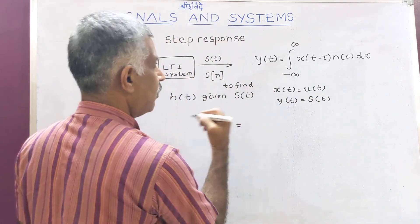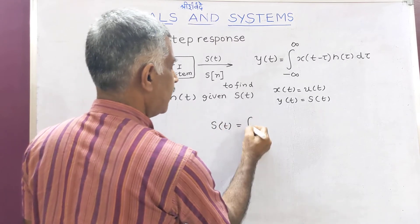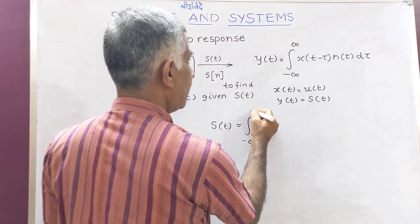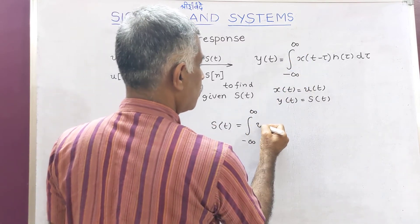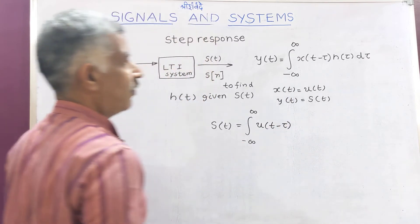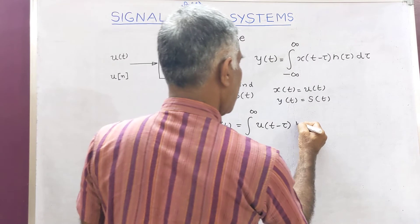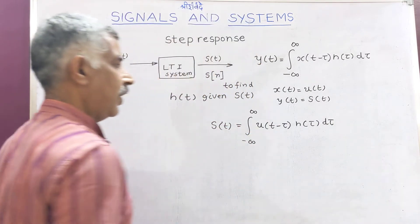Now you can write the convolution integral as S of T equals integral from minus infinity to plus infinity of U of T minus tau times H of tau d tau.